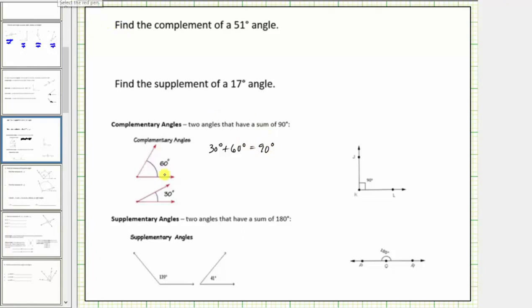In general, if we call this angle one and this angle two, when two angles are complementary, the measure of angle one plus the measure of angle two equals 90 degrees. Another way to think of this is if we were to combine two complementary angles, they would form a 90 degree angle as shown here.